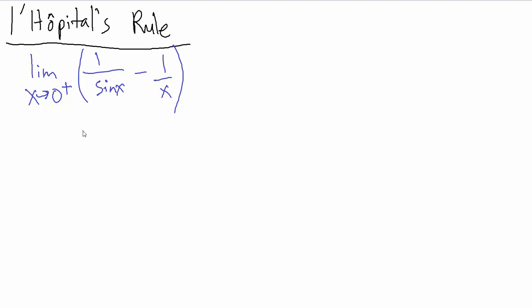In this video we're going to do another example with L'Hôpital's rule. This one is actually going to be a bit of a doozy. It's going to be the limit as x goes to zero from the positive side of the quantity one over sine of x, minus one over x.